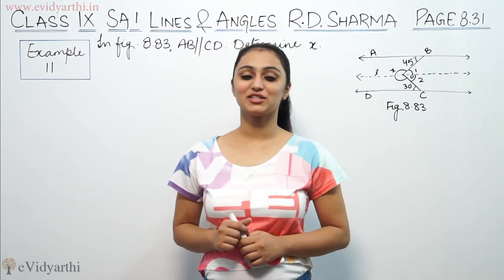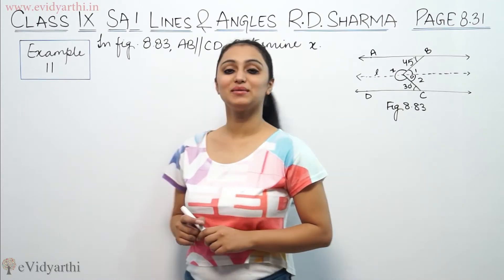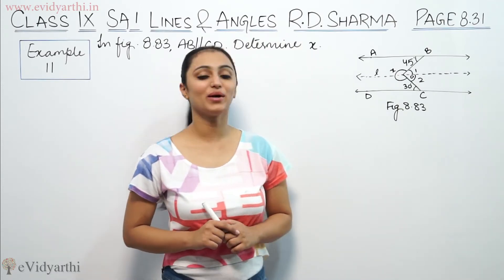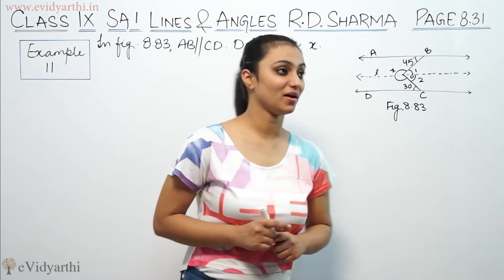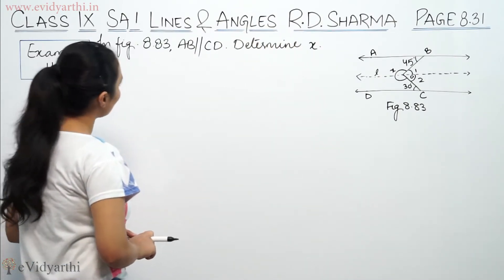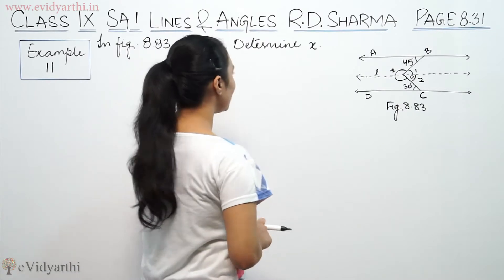Hi, this is Khushpu with another question of lines and angles. This is example number 11 from exercise 8.31 of RD Sharma. This says AB is parallel to CD.